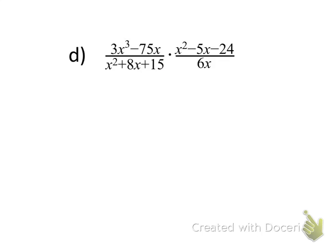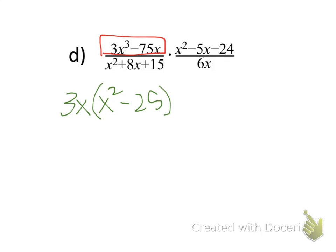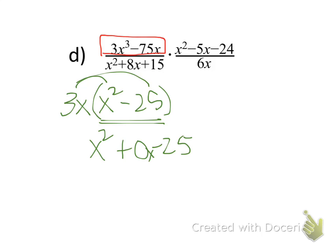I'd also like you to try this next one. Notice the first numerator has two terms: 3x³ and 75x. What do they have in common? We can factor out a 3x, leaving x² - 25. However, you still need to factor that — it can be written as x² + 0x - 25. Remember to also factor the denominator and the other numerator, and account for the factor of 6.